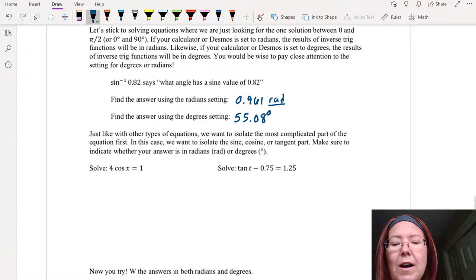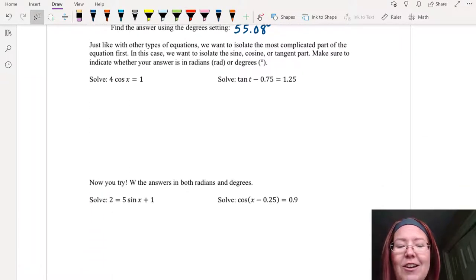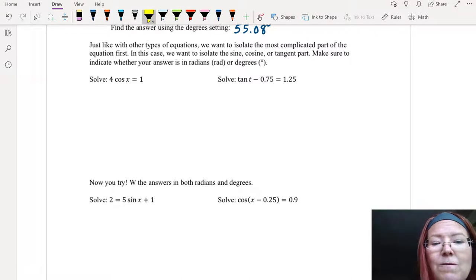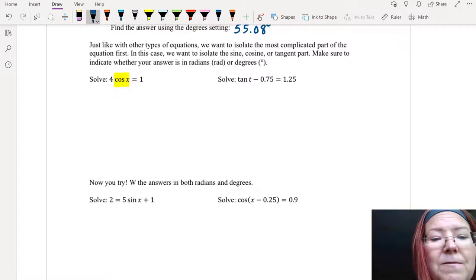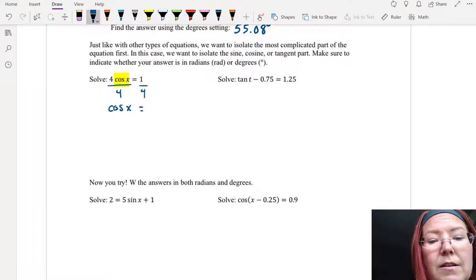Now when we want to solve a trig equation we are going to isolate the most complicated part of the equation first and then do the inverse. So in this case, solve 4 cosine x equals 1. We want to isolate the cosine x. Let's do that by dividing both sides by 4.